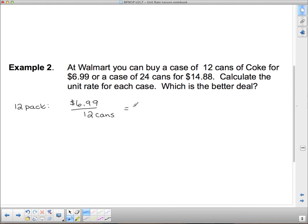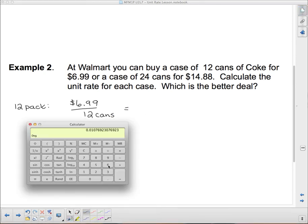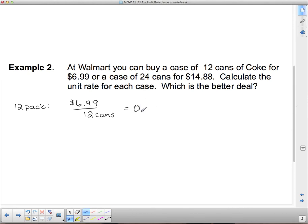And then I divide. $6.99, remember top divided by the bottom. $6.99 divided by 12. So, that's 0.5825. And that's dollars per can. So it costs about $0.58 per can if you buy the 12 pack.